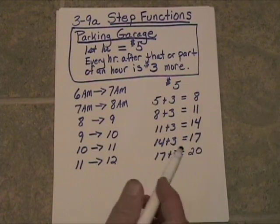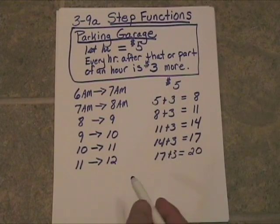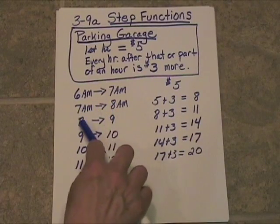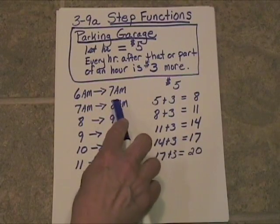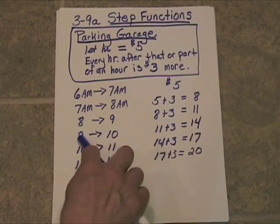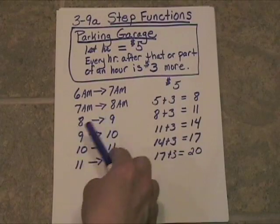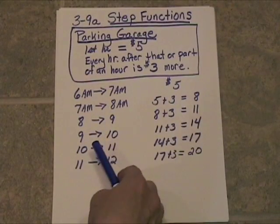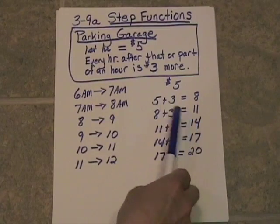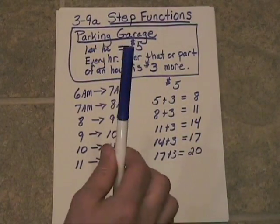The graph for this is like nothing we've ever seen before. Because if you'll take a look, two things are happening here at once — 8's on this line and 8's on this line, 9's on this line and 9's on this line. Now, 9 can't be in both spots; you can't be charged $11 and $14 right at 9. So we've got to show you how to do this graph.